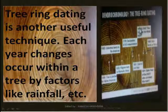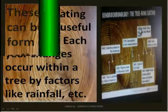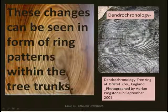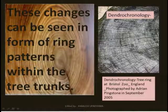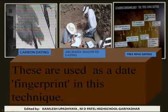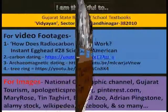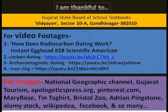Tree ring dating is another useful technique. Each year, changes occur within a tree by factors like rainfall, etc. These changes can be seen in the form of ring patterns within the tree trunks. These are used as a definitive fingerprint in this technique.